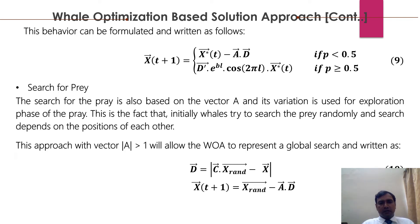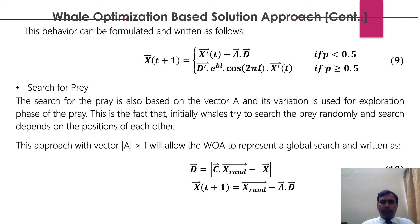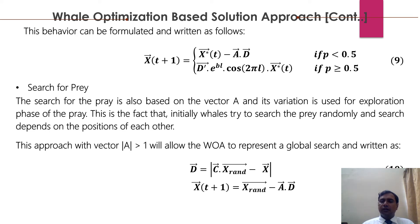The third process is search prey. The search for prey is also based on vector A and its variation, used for the exploration phase — where the whale tries to explore the location of prey. Initially, whales try to search for prey randomly, depending on the position of each other. This approach allows the whale optimization algorithm to represent a global search, formulated by equations 10 and 11.